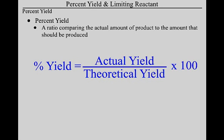Don't get this confused with percent error. Percent error is different in that there's a subtraction in the numerator — it's actual minus theoretical divided by theoretical, and that gives you the percent wrong, your error. Percent yield is the percent right: it's actual divided by theoretical. Because you don't do the subtraction, it's not the amount you got wrong, it's the amount you got right.